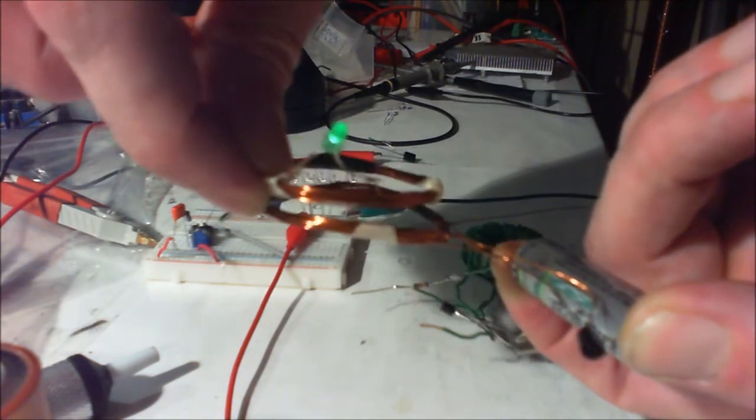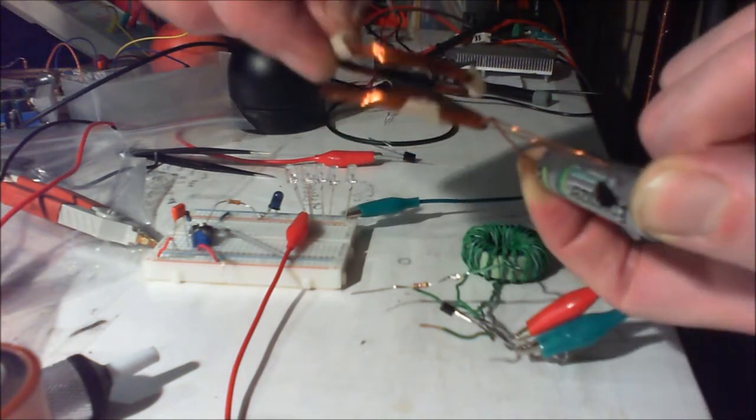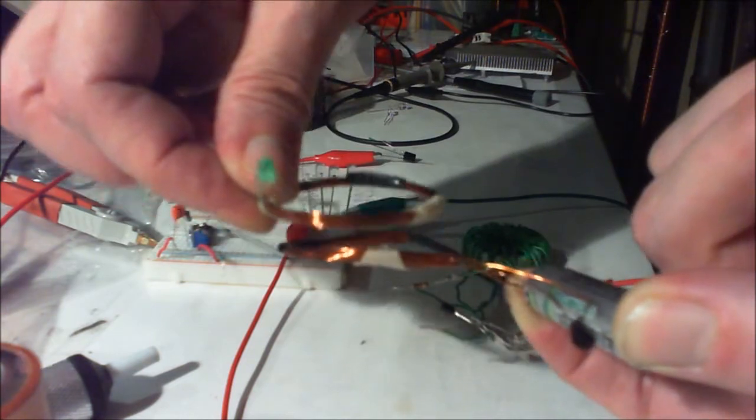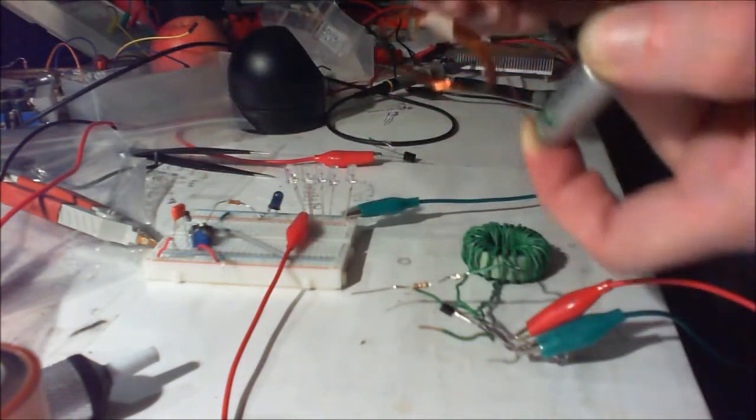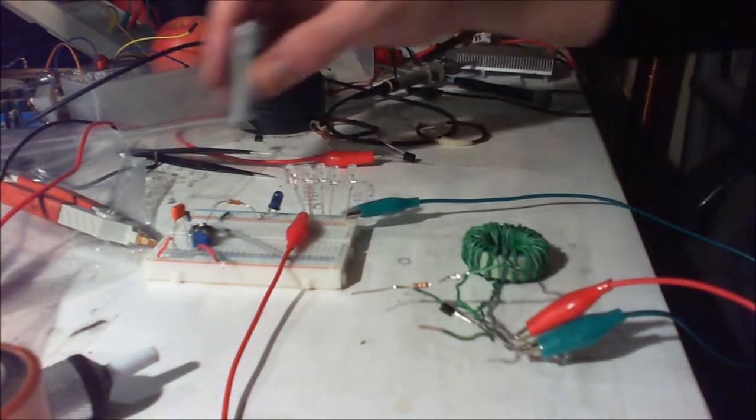And it's basically like a Joule Thief, except this is just using this ring instead. Now I can say that battery is pretty dead, and so that's pulling that out of there. That's pretty good.